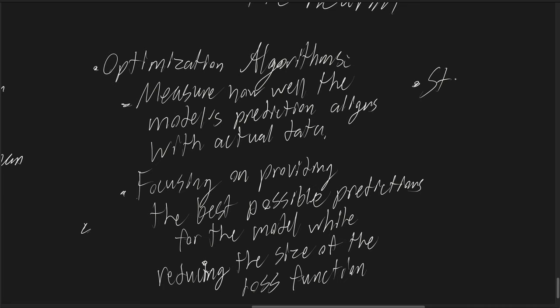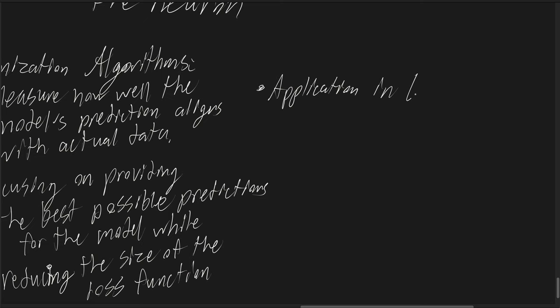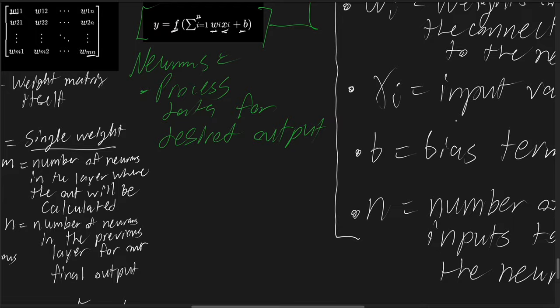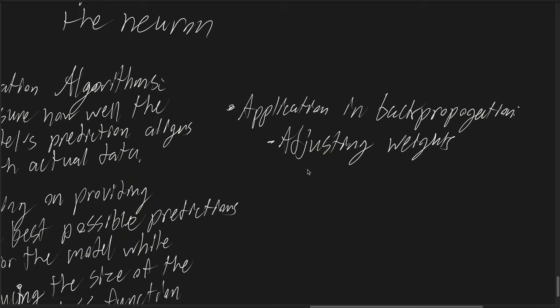During training, the network uses backpropagation to adjust the weights based on the error of the output, as indicated by our weight matrix. This involves calculating the gradient of the loss function to update the weights accordingly.